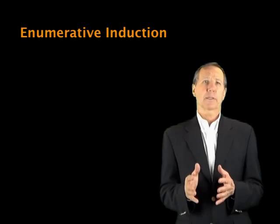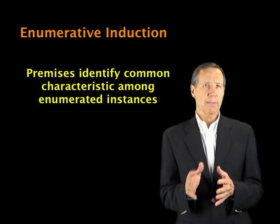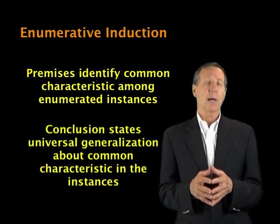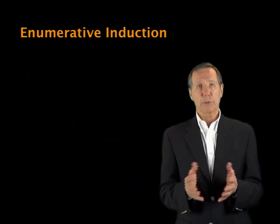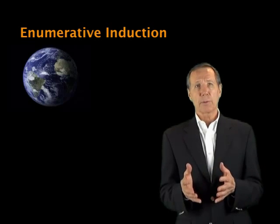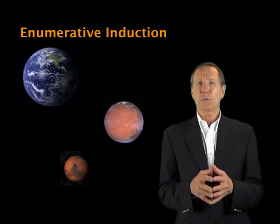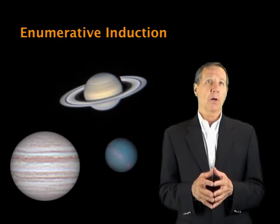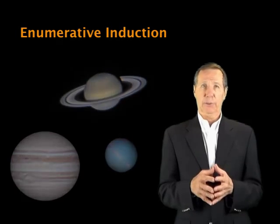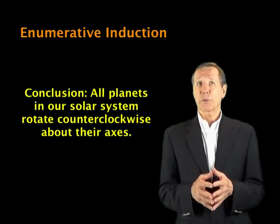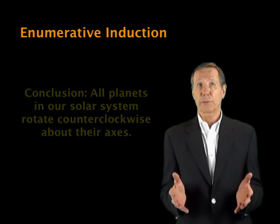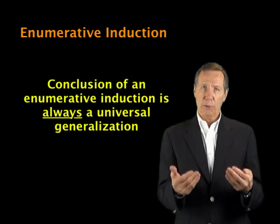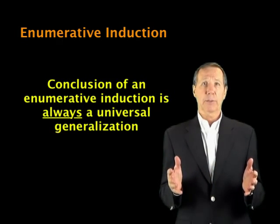In an enumerative induction, we look at specific instances, noting their characteristics, and then conclude with a universal generalization about the instances. Here's an example from astronomy: the Earth, Mercury, and Mars rotate counterclockwise around their axes. Saturn, Jupiter, and Neptune also rotate counterclockwise around their axes. So it seems likely that all the planets in our solar system rotate counterclockwise around their axes. The conclusion is a universal generalization, inferring that counterclockwise rotation is common to all planetary bodies in our solar system.